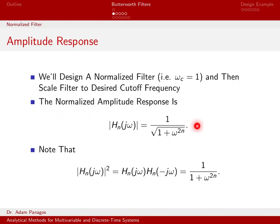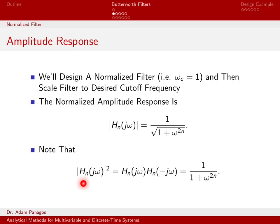Since this is the amplitude response, the amplitude response squared, by definition, is the magnitude of something squared, which equals the thing times its complex conjugate. Since there are no j's here, this just turns into 1 over the square root of (1 + ω^{2n}) times itself, giving amplitude response squared equal to 1 over (1 + ω^{2n}). Keep in mind this can be written as the product of the original amplitude response times the conjugate of the amplitude response — we'll use that for factoring in a moment.